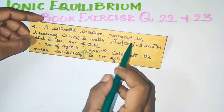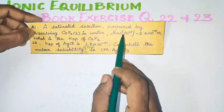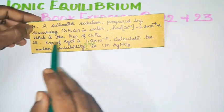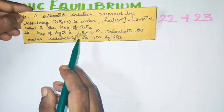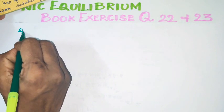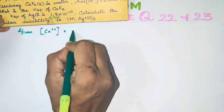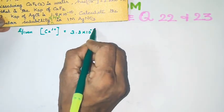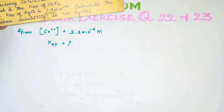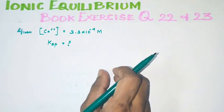A saturated solution prepared by dissolving CaF2 in water has Ca²⁺ concentration which is equal to 3.3 × 10 power minus 4 M. What is the Ksp of CaF2? So in the sum, lernandu kudu thirukkangan. Ca²⁺ concentration kudu thirukkangan given — enna kakiranga? Ksp value wakandu piti kakiranga. Sariya?